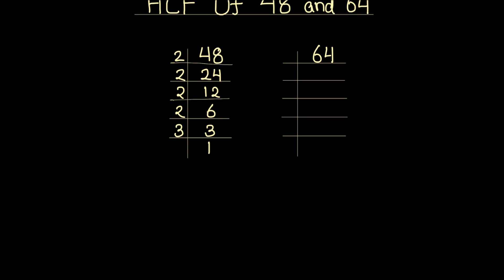Now let's divide 64 using prime numbers. As it is an even number, we can divide it by the first prime number, 2. We continue dividing: 2 times 2 is 4, 2 times 4 is 8, 2 times 8 is 16, 2 times 16 is 32, and 2 times 1 is 2. Now both numbers are fully divided.